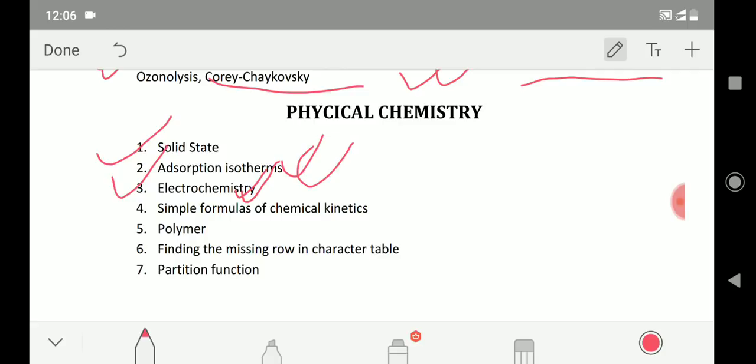Then simple formulas of chemical kinetics and also thermodynamics you can do, but thermodynamics is a very vast topic and in CSIR NET exam, very few questions come from thermodynamics. So I will not say to focus more on that, but chemical kinetics you can look into the little formulas like what is the order or what is the rate equation for first order, second, third order reaction or zero order reaction. Those things you should remember.